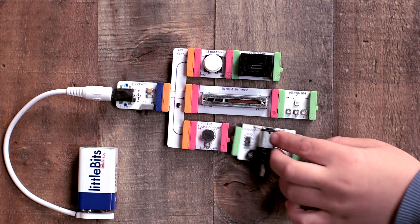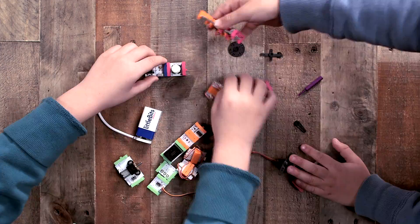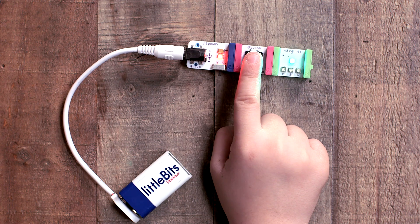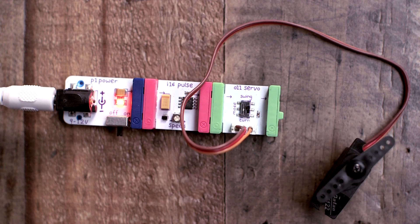The bits are color-coded to help kids know what's what. It's a slick way to learn the basics, like power sources come first and inputs come before outputs.